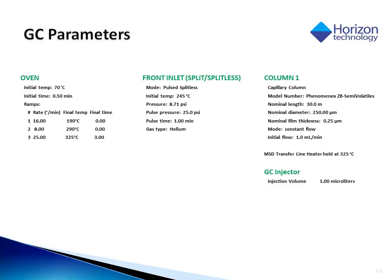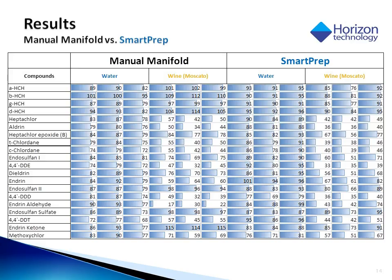Shown here are the GC parameters of this particular assay. Here is a table of results comparing the manual manifold versus the SmartPrep extraction of water and wine. As you can see, for both the water and wine extraction, the recoveries are very comparable. This shows that we are able to successfully mimic the manual SPE method on the SmartPrep by automating the process.